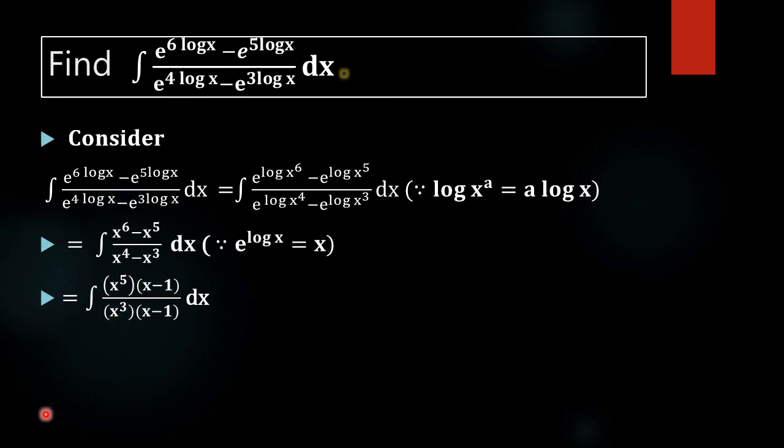By cancelling numerator and denominator here we will get x square that is integral x square dx and that integral value of this integral x square dx is x cubed by 3 plus c. This is our required answer.